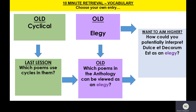I'd like you to pause the video and have a go at answering these three questions. Which of the poems we've studied so far use cycles in them? Which poems in the anthology can be viewed as an elegy? And how could you potentially interpret Dulce et Decorum Est as an elegy? That's asking you to think back to last term before Christmas when we looked at the war poetry. Dulce et Decorum Est was the one about the gas attack written by Wilfred Owen in World War One. So pause the video now and have a go at answering those questions.